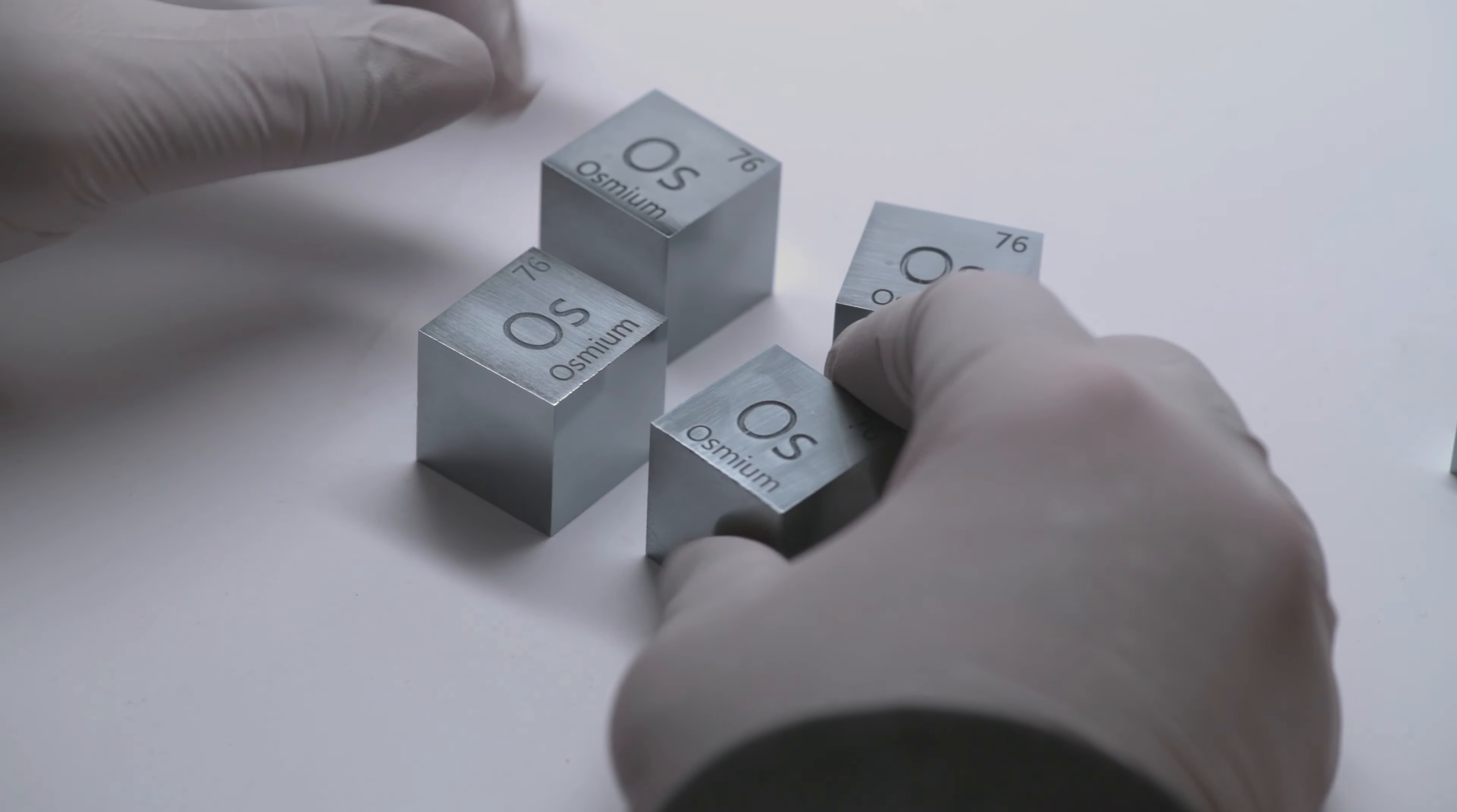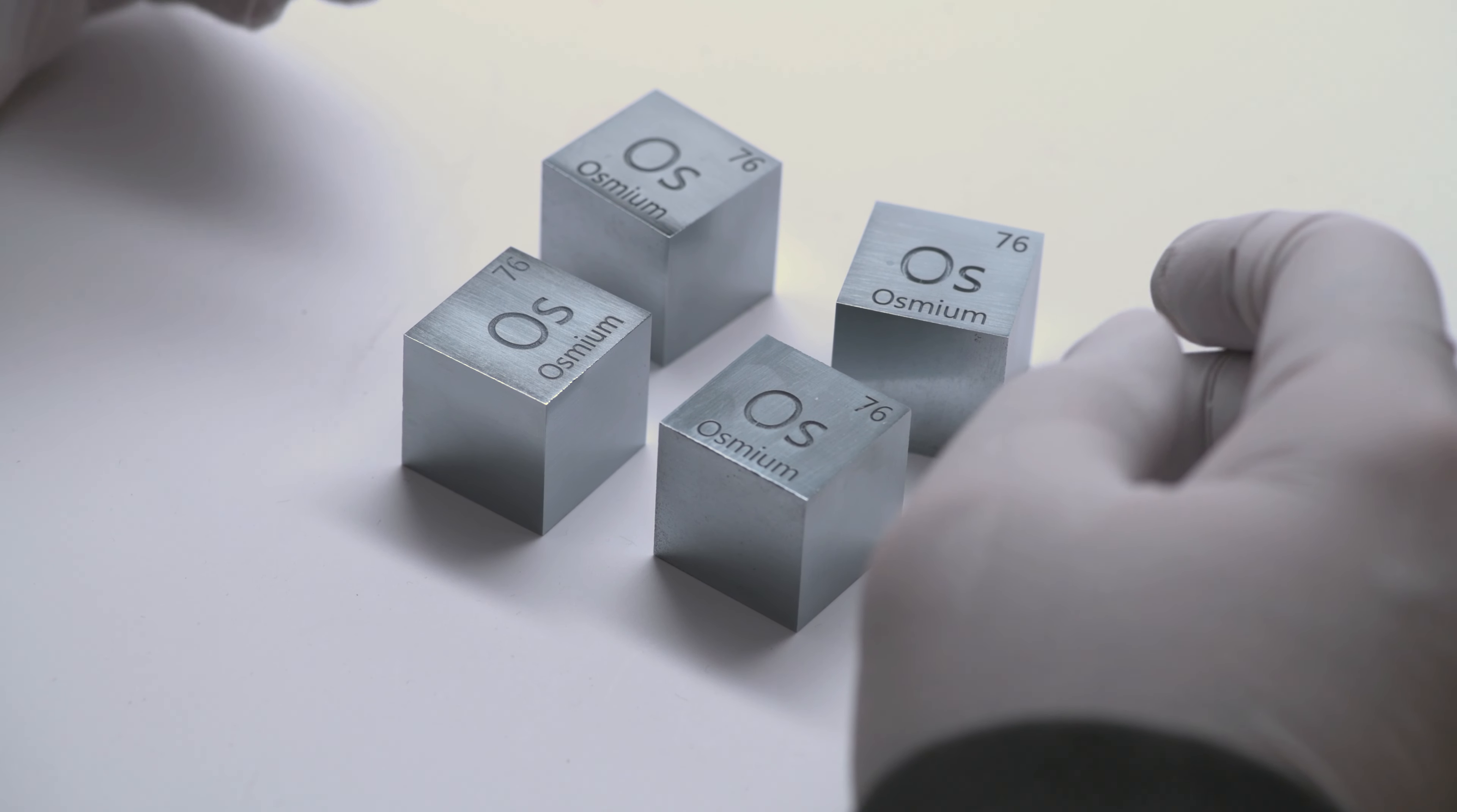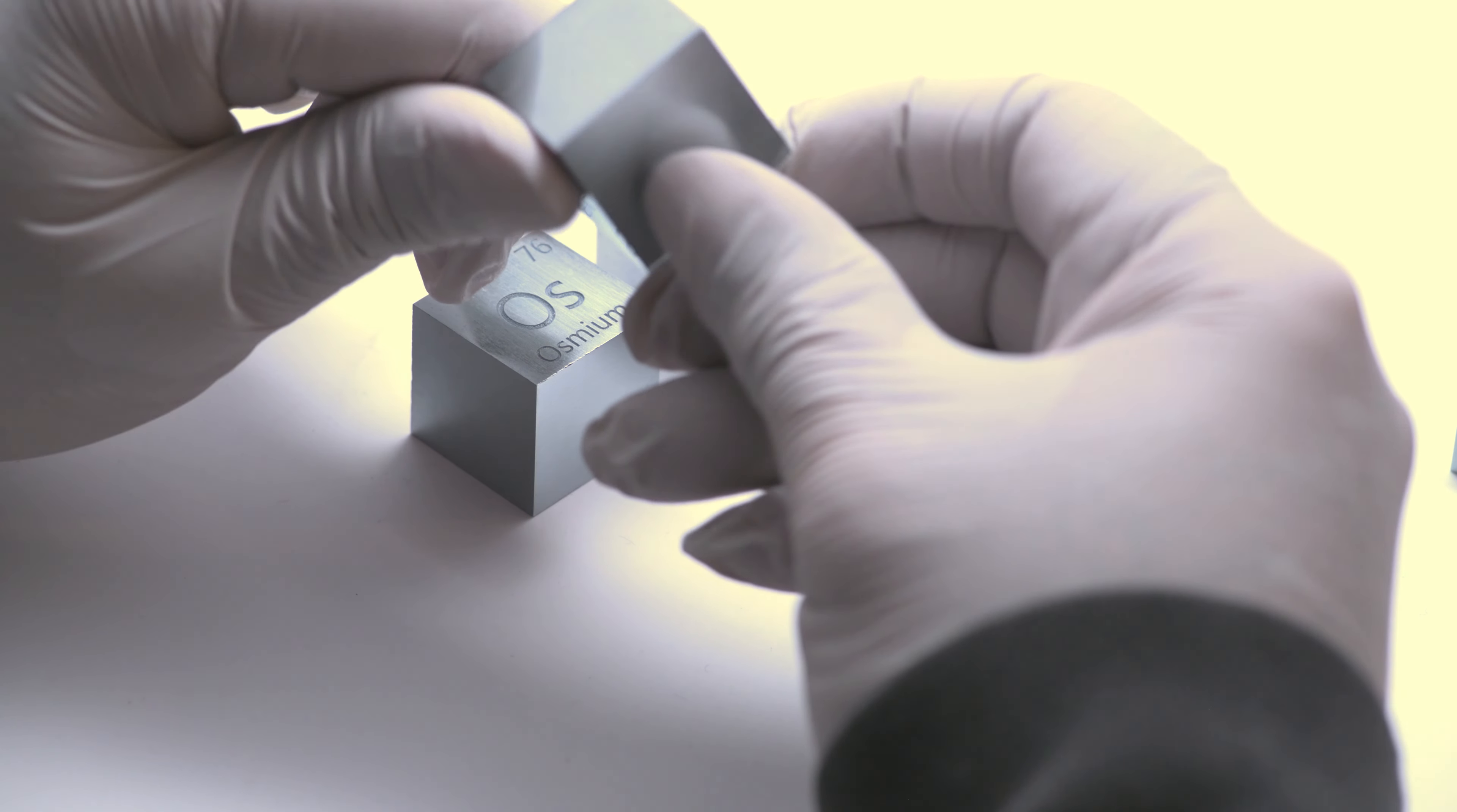Still, it does not reach the theoretical density of 22.59 grams per cubic centimeter. The reason is because this metal is actually pressed powder.